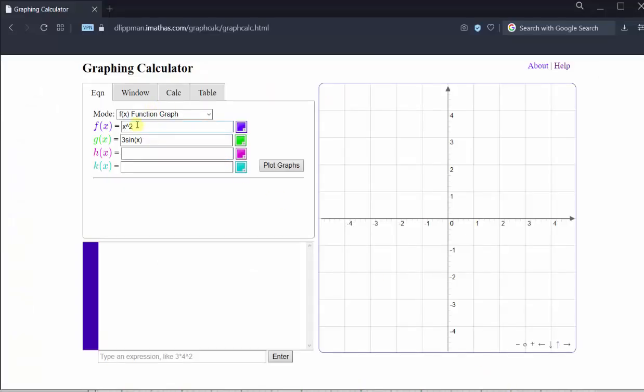To begin, let's clear the existing functions. F of x is equal to 5x minus 11, and g of x is equal to 3x plus 3. Click Plot Functions.